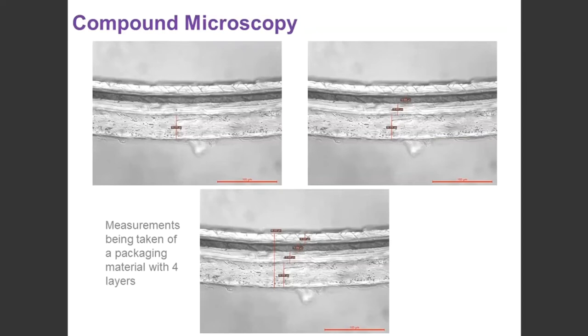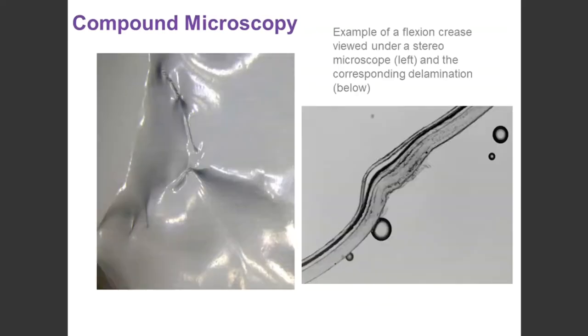Now, compound microscopy is also a useful tool for examining defects, for example, such as flexion creases or bubbles that we've seen in multi-laminate retort pouches. This is an example that we've got here, a flexion crease. This image here is a flexion crease on the pouch that's actually taken under a stereo microscope, which we'll look at briefly in a bit.